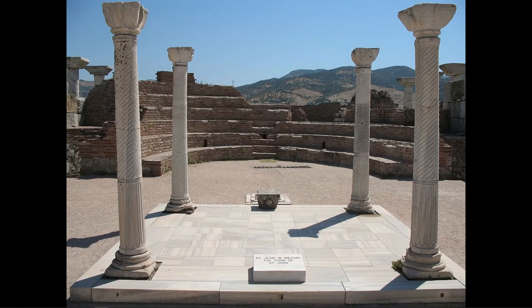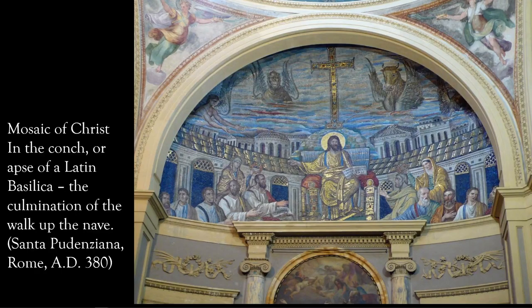Unfortunately, all that's left of it today are four Byzantine columns and the ranked synthronon for the seating of the clergy. The essential idea here was to replace the linear processional route to the apse with its mosaic of Christ in the conch of the altar — as you can see in Santa Pudenziana in Rome — with a vertical dimension of the church, which places the icon of Christ in the centre of the dome rather than at the end of the procession.